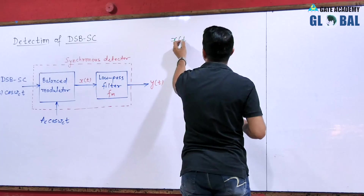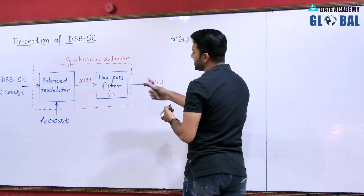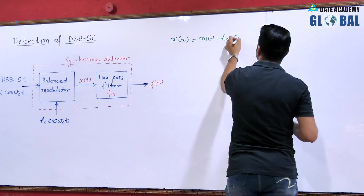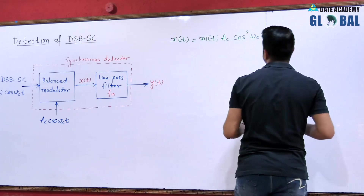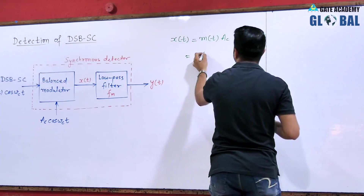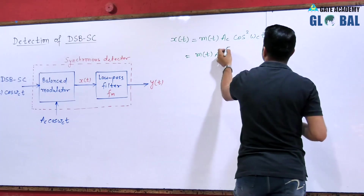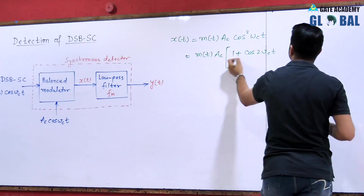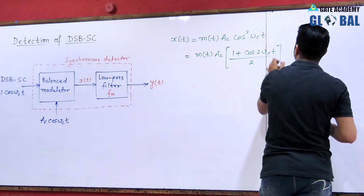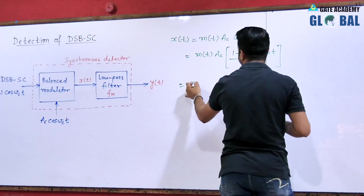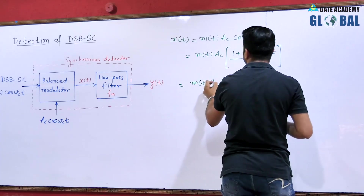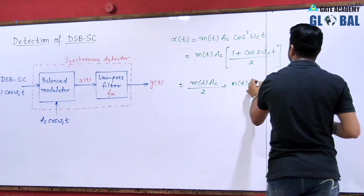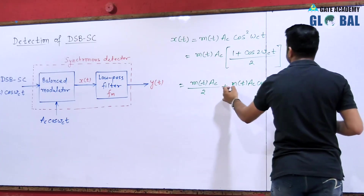What will x(t) be? x(t) is the multiplication of the two inputs. We get m(t)·AC·cos²(ωC·t). Using the identity cos²(ωC·t) = (1 + cos(2ωC·t))/2, when we multiply through we get m(t)·AC/2 as the first term and m(t)·AC·cos(2ωC·t)/2 as the second term.